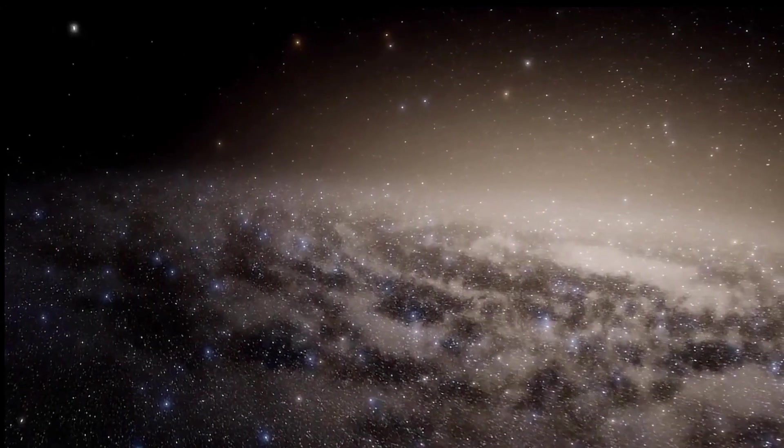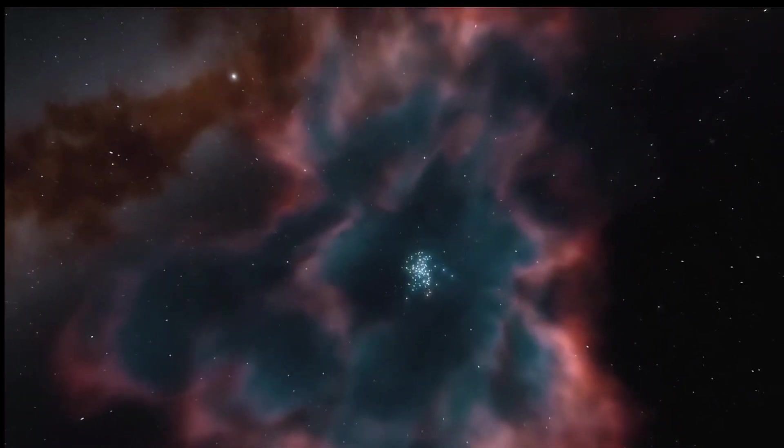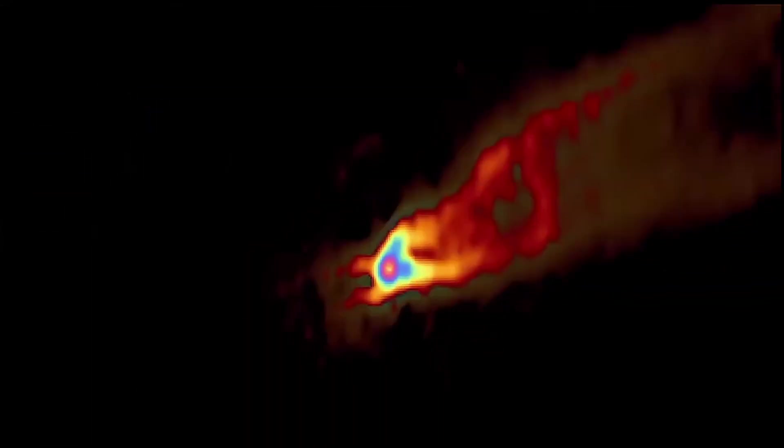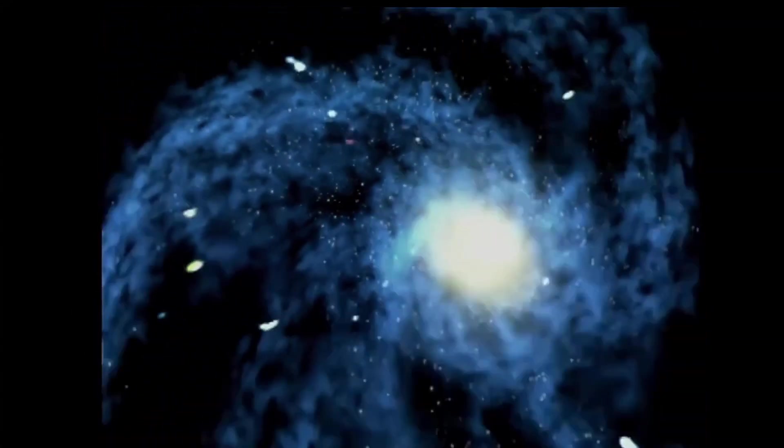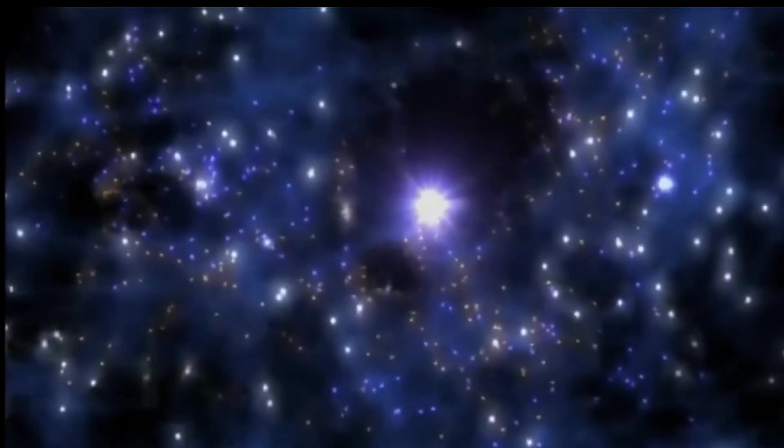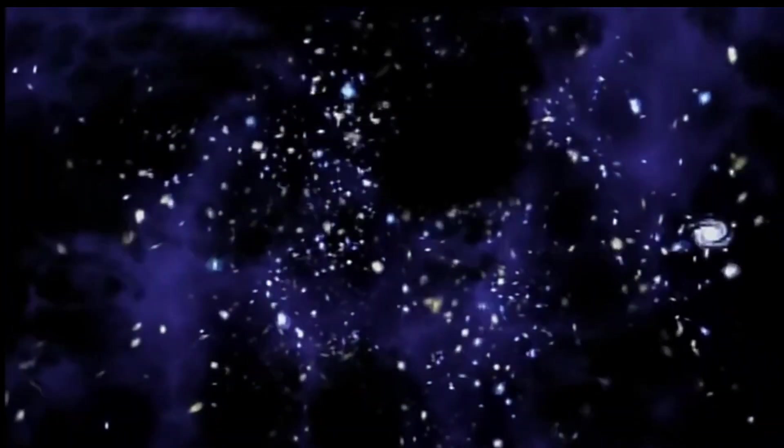As you look further out into the universe, to more and more distant galaxies, you're looking further back in time. Because you look at something that's a billion light years away, then the light took a billion years to get to us. So, you see it as it was a billion years in the past. And we can actually look so far out that we can see almost back to 13.8 billion years ago, which is very close to the Big Bang. So, we can look to light that began its journey before there were galaxies. And that's the oldest light in the universe.